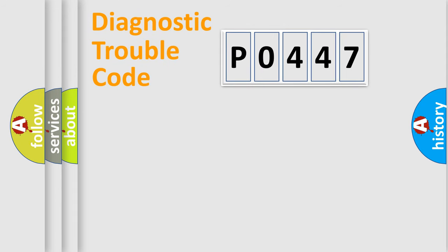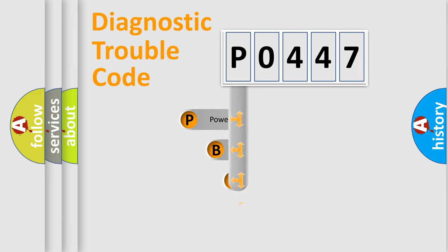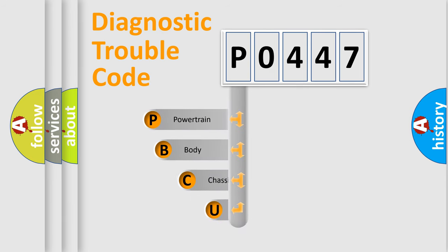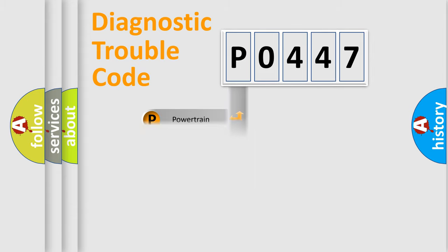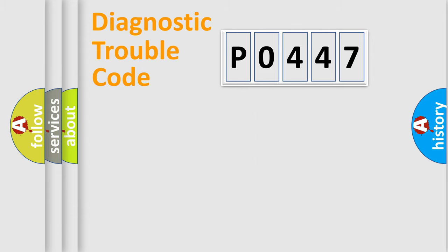Let's do this. First, let's look at the history of diagnostic fault code composition according to the OBD2 protocol, which is unified for all automakers since 2000. We divide the electric system of the automobile into four basic units: Powertrain, Body, Chassis, and Network.